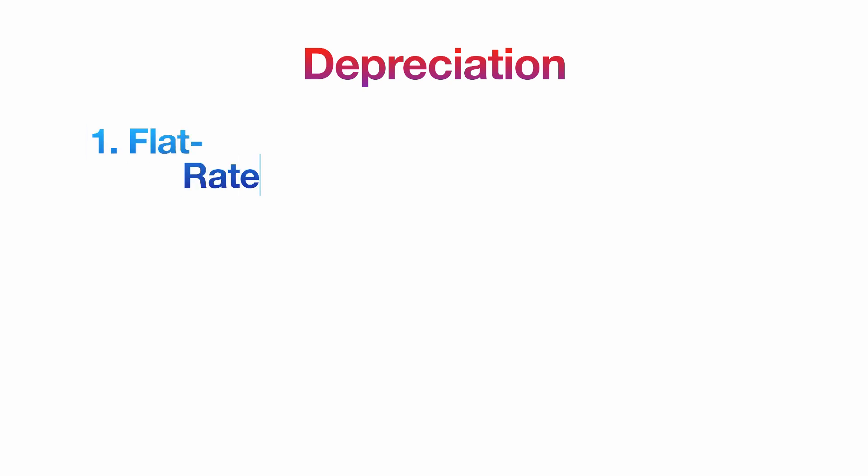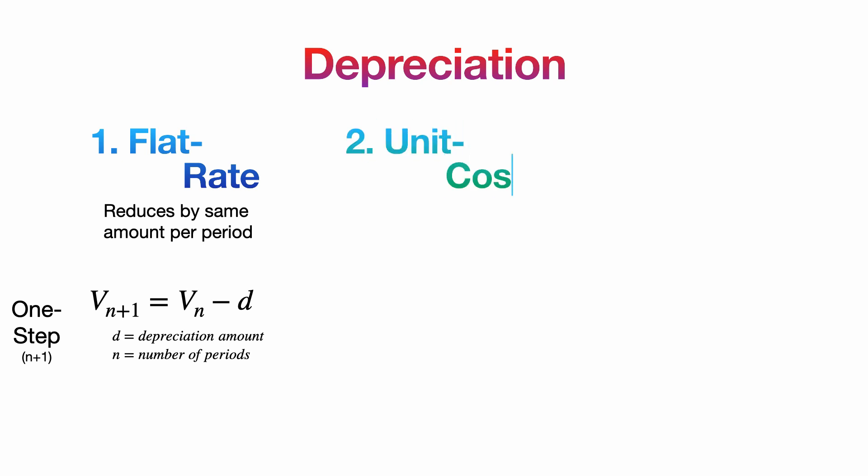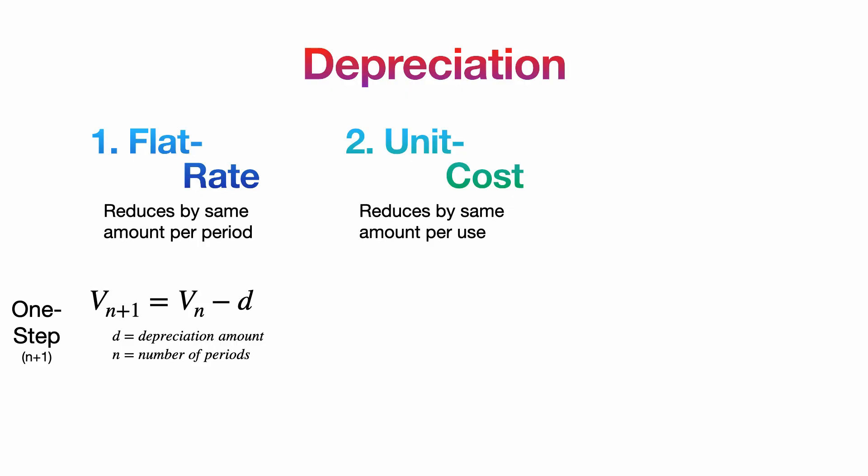The first is flat rate depreciation, where the value of an asset reduces by the same amount per period. The recurrence relation for this is here, where D is the same amount of depreciation for each period. The second is unit cost depreciation, where depreciation is based on how frequently an asset is used. Kind of like how the more you spend your time procrastinating, the more you realise how screwed you are for your exam.